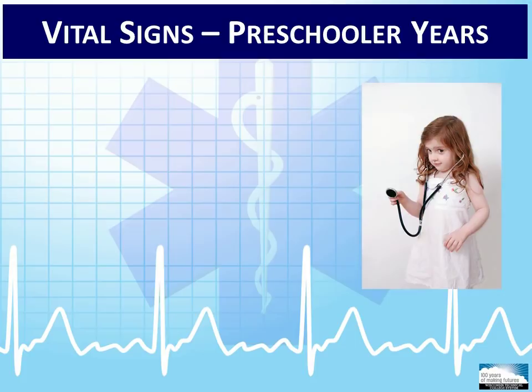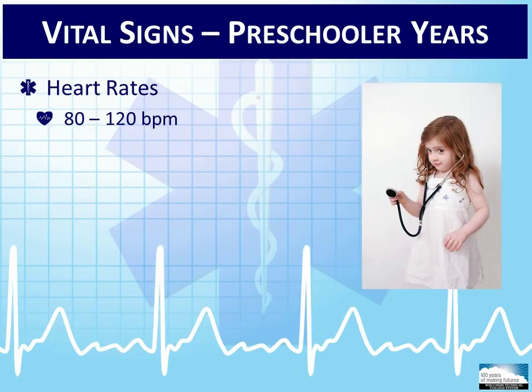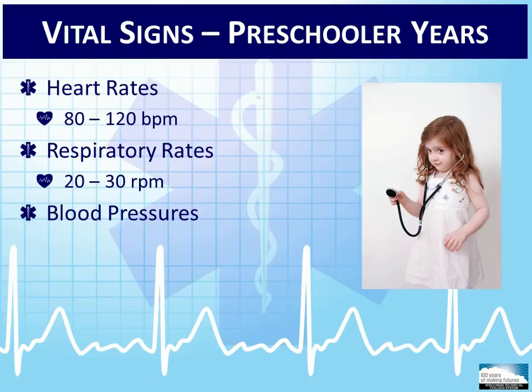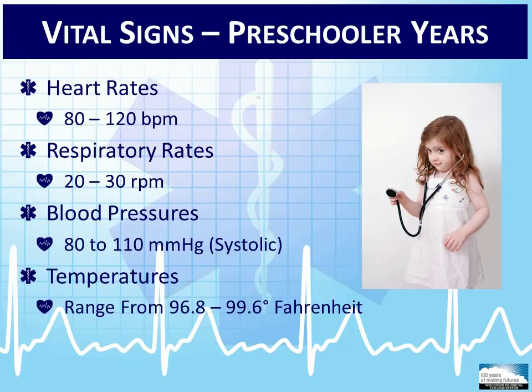Typical vital signs during the preschooler years are as follows: heart rates range from 80 to 120 beats per minute, respiratory rates range from 20 to 30 respirations per minute, systolic blood pressures range from 80 to 110 millimeters of mercury, and temperatures range from 96.8 to 99.6 degrees Fahrenheit.